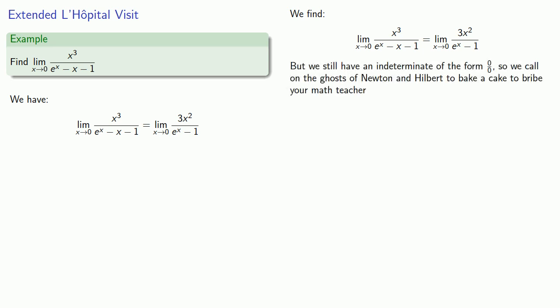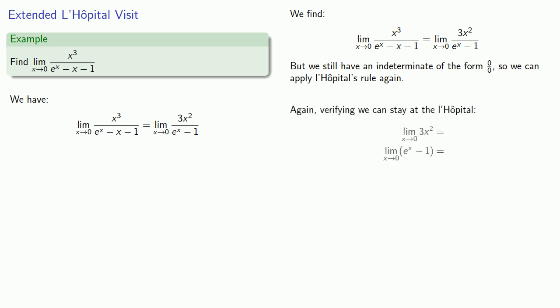But this is still an indeterminate of the form 0 over 0. And so we should apply L'Hôpital's rule once again. Of course, our insurance company might not pay for another night's stay, so we have to verify that we are allowed. So we'll take the limit of the numerator and denominator. And since both are 0, L'Hôpital's rule can be applied once more. And we get a new limit.